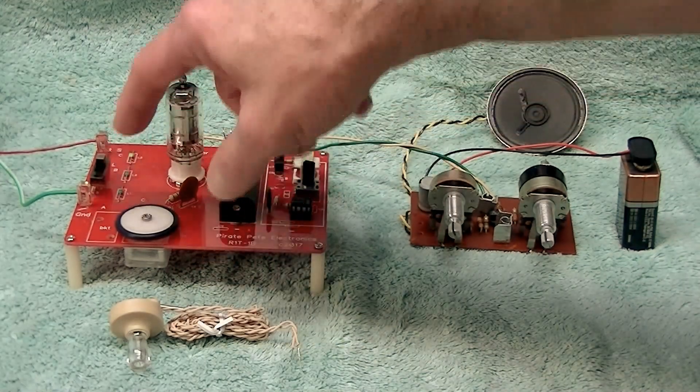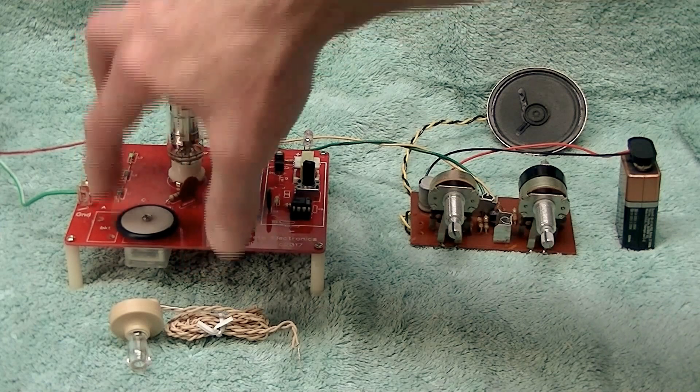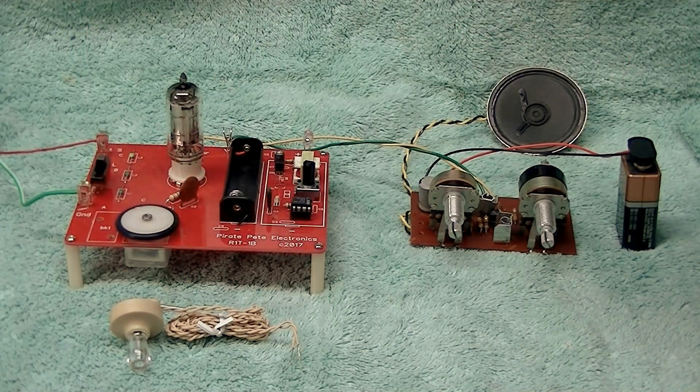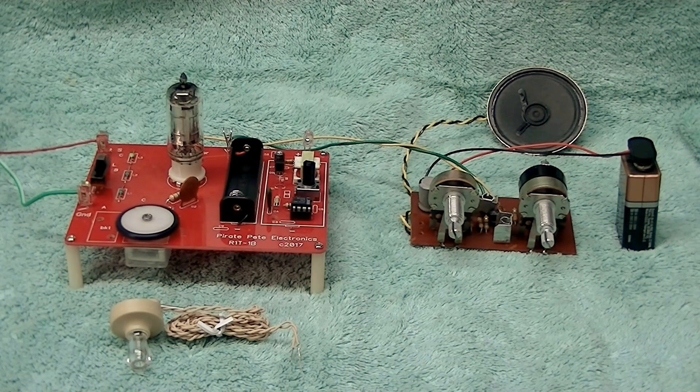The circuit board does have a provision, as you can see this area marked bracket, where you can mount an original loop stick coil which we do sell if you wanted to recreate the original version of the kit.